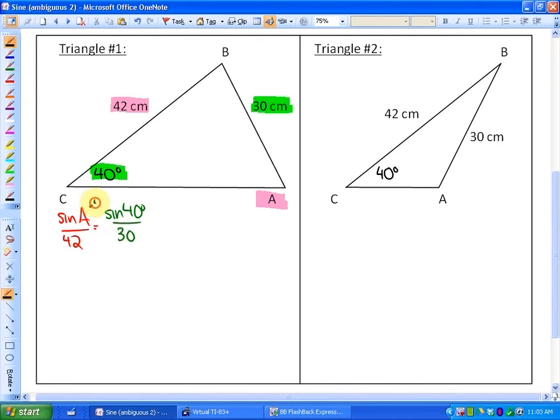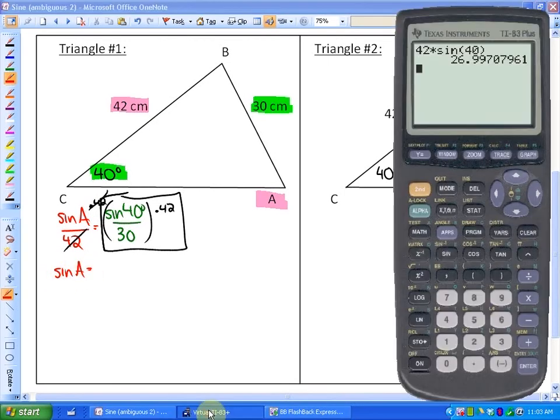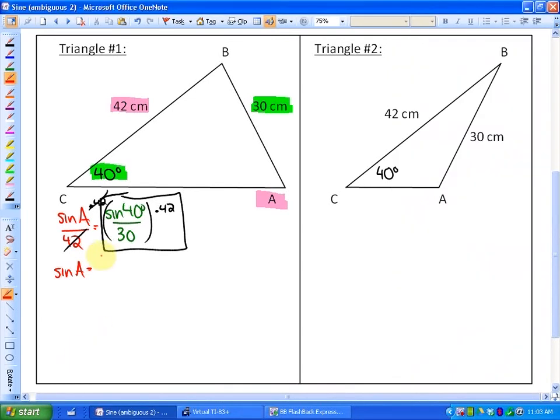The first step of algebra, we multiply both sides by 42. And being careful on my calculator, I will calculate what I've put a box around there. So the sine of A is equivalent to—and again I'll use multiple steps on my calculator—I'm going to do sine 40 in brackets, divided by 30, hit equals, and now times it by the 42 that I brought over from the other side. So it's 0.8999026.